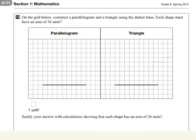You need to construct a parallelogram and a triangle using these darker lines. Each shape must have an area of 36 units squared. So one of these little squares represents one unit.